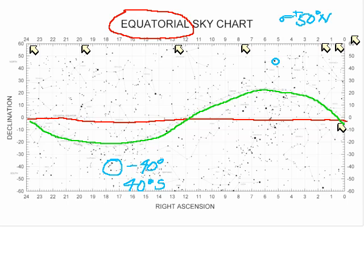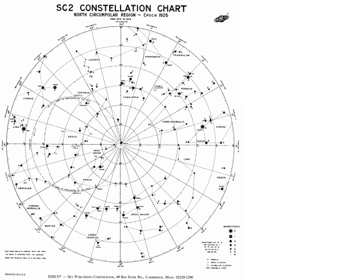The equator has zero degrees of declination. The ecliptic, however, varies between negative 23.5 degrees and positive 23.5 degrees declination. In the polar region of the sky map, we have a similar arrangement, but cut off at 60 degrees — the polar chart goes all the way to 90, showing stars near the North Celestial Pole. We can see the Big Dipper, the constellation Cassiopeia, and Polaris almost at 90 degrees north. Other stars include Deneb and Capella, which we circled on the other chart.